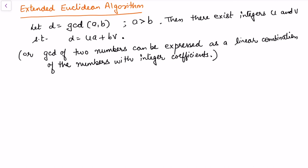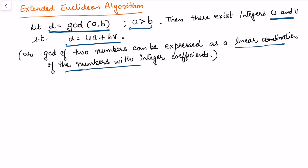Now we look at the extended Euclidean algorithm, which states that if d is the GCD of two numbers a and b, with a greater than b, then there exist integers u and v such that d can be written as a linear combination of a and b. In other words, the GCD of two numbers can be written as a linear combination of those numbers with integer coefficients.